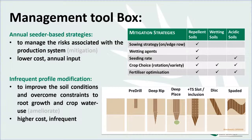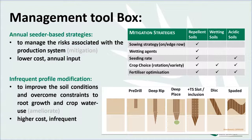When we talk about amelioration, we think more about profile modification methods — intensive physical interventions that are higher cost. We're looking to apply them less frequently, so every three to five years, specifically to address those constraints and improve the soil environment for root growth.